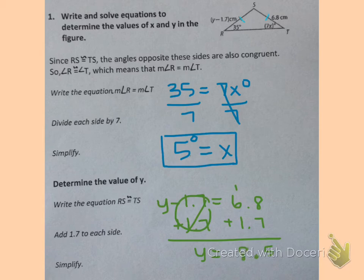So Y is 8.5, and then we have to look back and see what the unit of measurement was for the side. It was centimeters. So Y is 8.5 centimeters.